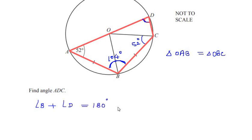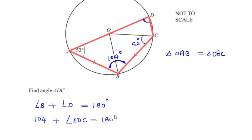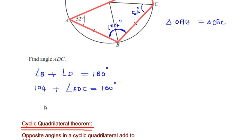In the given example, ABCD is a cyclic quadrilateral and angle B is opposite to angle D. So we write: angle B plus angle ADC equals 180 degrees. We have angle B as 104 degrees, so angle ADC equals 180 minus 104, giving us angle ADC equals 76 degrees.